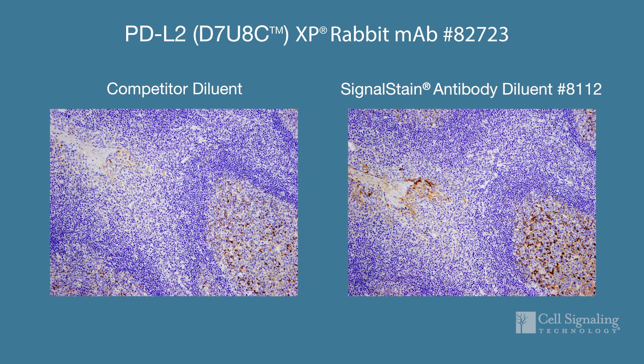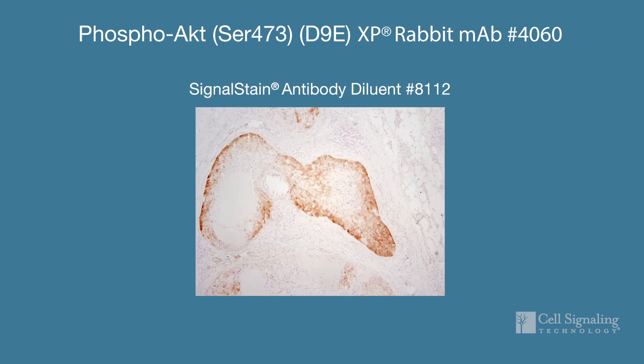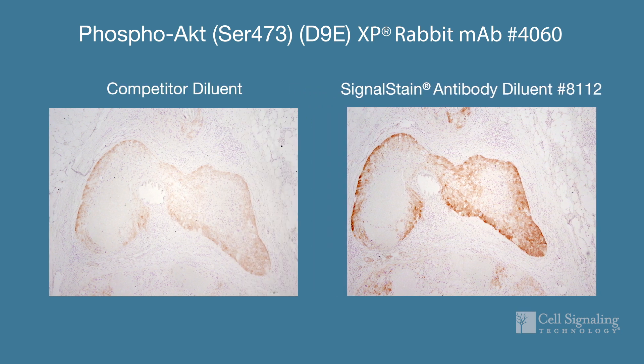The optimal antibody diluent supports antibody-epitope interactions and specificity, and ultimately the strength of your staining. Differences in diluent pH and ionic strength can increase or decrease specific interactions of the antibody with its target. Additionally, diluent properties may affect non-specific interactions with off-target molecules and can affect antibody stability. These problems can be overcome by addition of serum proteins as stabilizing agents, along with optimizing the pH.